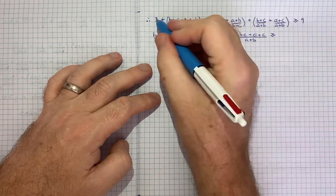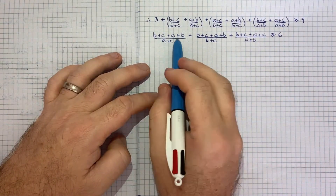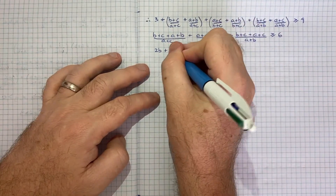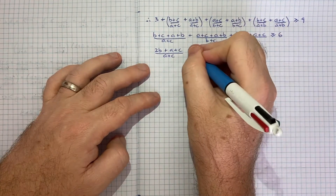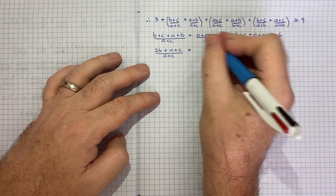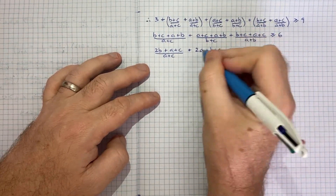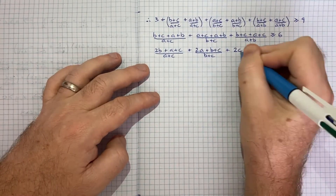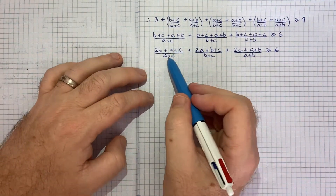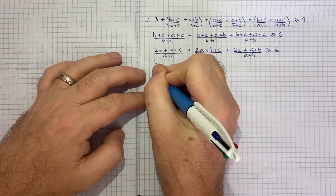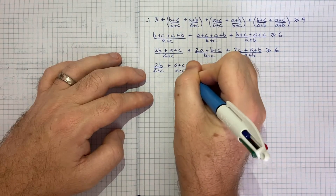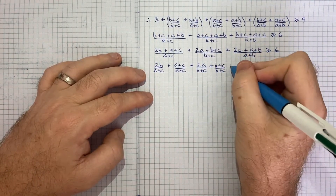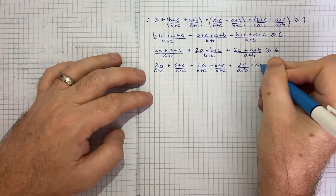This gives: 2b/(a+c) + (a+c)/(a+c) + 2a/(b+c) + (b+c)/(b+c) + 2c/(a+b) + (a+b)/(a+b) ≥ 6. The three terms (a+c)/(a+c), (b+c)/(b+c), and (a+b)/(a+b) each equal 1, giving another three ones. So we have: 2[b/(a+c) + a/(b+c) + c/(a+b)] + 3 ≥ 6.